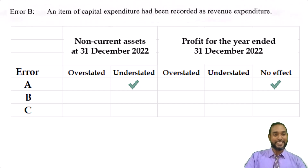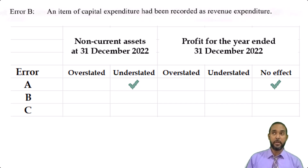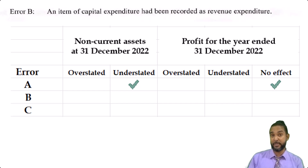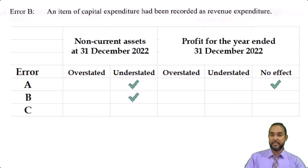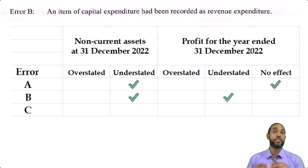Error B says an item of capital expenditure had been recorded as revenue expenditure. So let's say, for example, they bought a motor vehicle for $10,000, but instead of recording it in the motor vehicle account, they put it in motor expenses account. Your revenue expenses would be too high. That means two things: one, they didn't record it in the motor vehicle account, so the non-current assets would be understated; and your net profit would also be understated because you put a figure in the expense section of your income statement that should not be there. Your expenses would be too high and your profit would be too low.